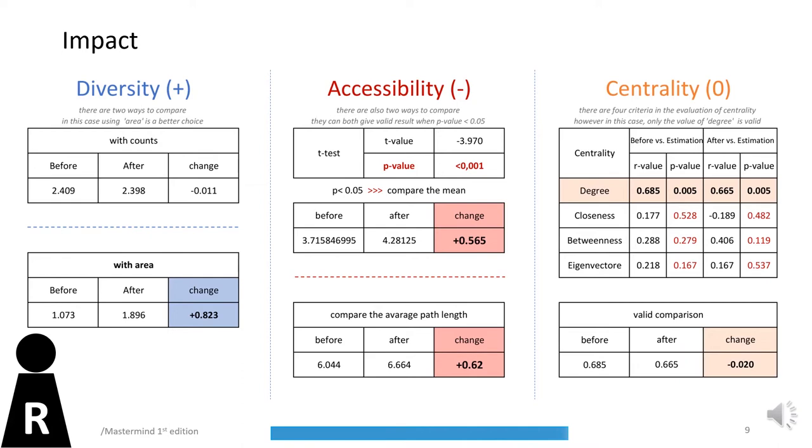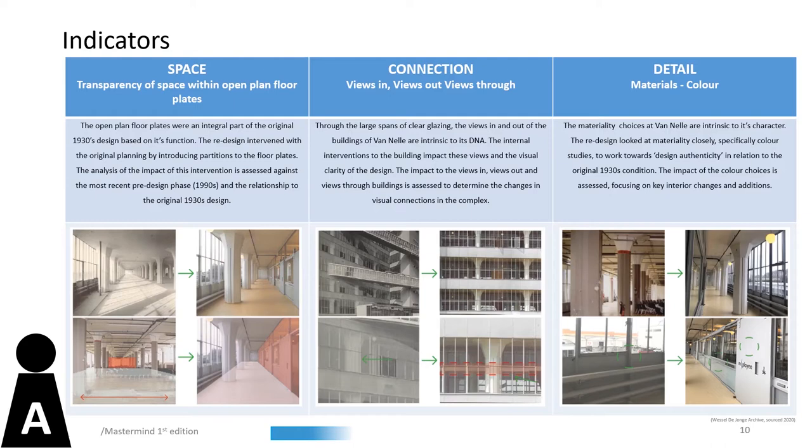For evaluating the redesign in the architecture domain, three indicators of space, connection and detail have been reviewed. The space indicator regards the typical open plan floor plates. Connection assesses views in, out and between the buildings, through the large spans of clear glazing. Lastly, details, analysing the colours used for internal design aspects.